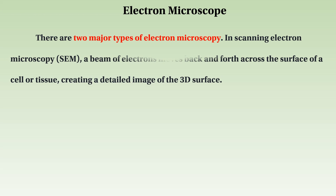There are two major types of electron microscope. One type scans across the surface of a specimen or tissue, creating detailed images of the 3D surface.